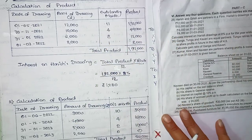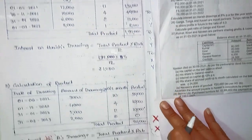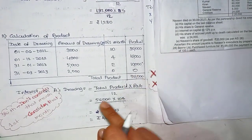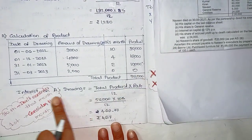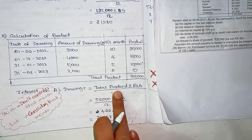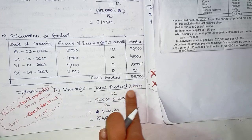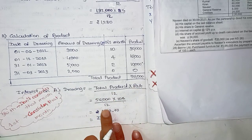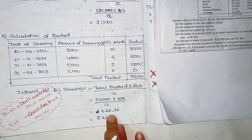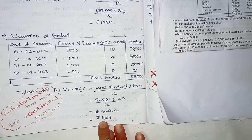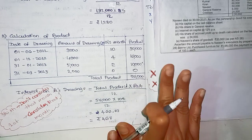If the new calculation is wrong, then you can use the correction — this is very simple. Interest on Ace's drawing: the formula is total product multiplied by rate, divided by 12. So it is 466.67 — to the nearest digit, it is 467.